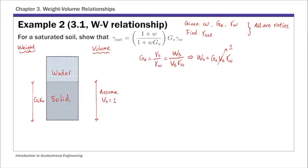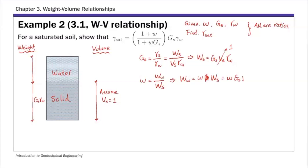Next, I'm going to solve for the weight of water, because we know the moisture content w, which is given. Moisture content is defined as weight of water over weight of solids, from which we can solve for weight of water. Substituting the weight of solids we just found, weight of water equals moisture content times GS times gamma w.